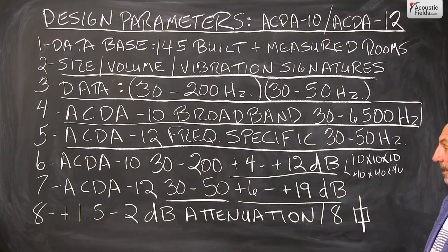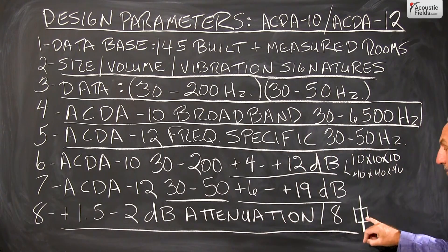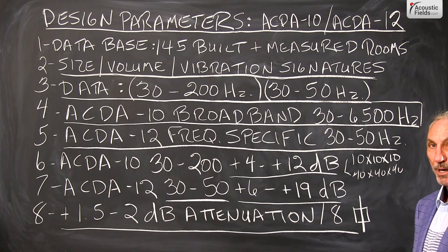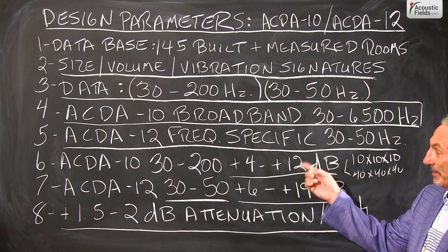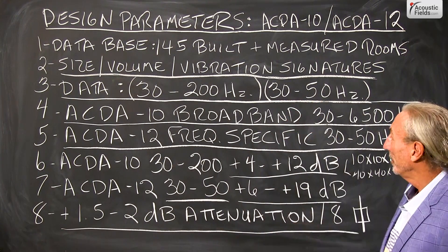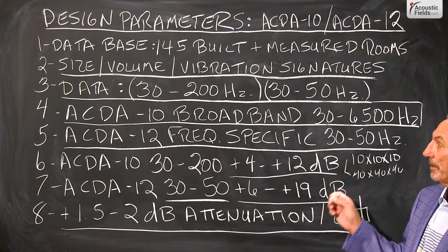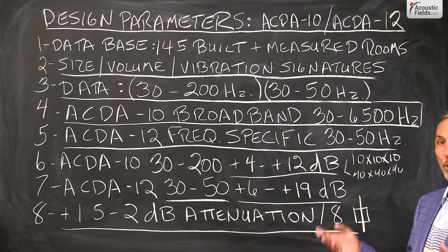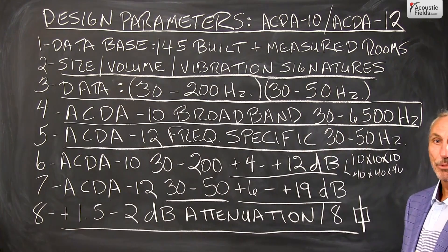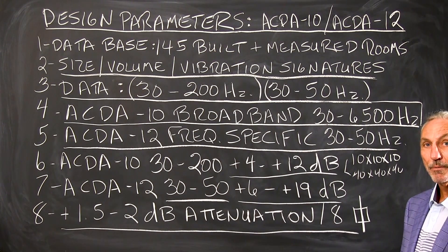And we got it — we did it. Pound for pound, square foot for square foot, you can't beat us. We deliver plus 1.5 to 2 dB attenuation for every 8 square feet of surface area in our products. This is how we went after these two frequency groupings, and you'll find these problem areas — 30 to 200 and 30 to 50 Hz — represented in all small rooms. We use science; we created technology to deal with actual data that's in rooms, and that's why people are so happy with the low end of their rooms now.